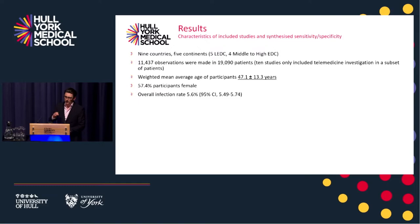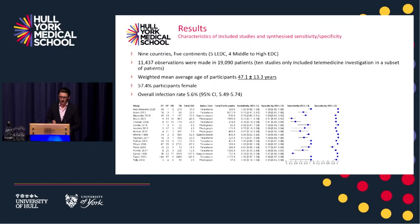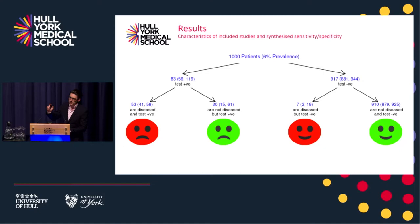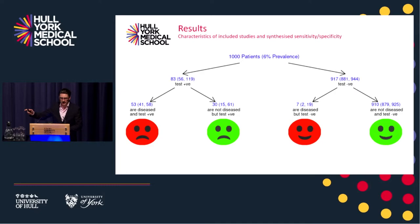The overall infection rate across all studies was about 5.5%, which is in line with the literature. We have a forest plot of sensitivity and specificity, and the important figure is that the mean sensitivity of using any telemedicine was 87.9%, and the mean specificity was 96.8%. In short, if you took 1,000 patients that had had an operation and conducted all of their follow-up online, 910 patients who didn't have an infection you would correctly say don't have an infection. And of 83 patients you identified as having an infection virtually, 53 of those would actually have an infection — so there'd be about 30 that you would call back unnecessarily.